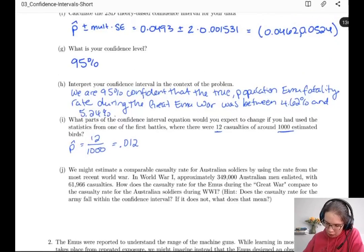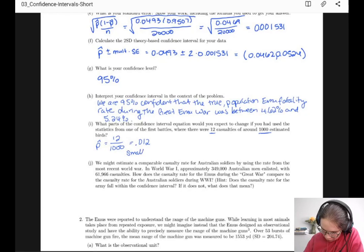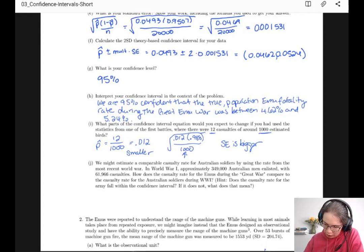So our p hat is a lot smaller, right? Our standard error is going to change primarily because we've got a 1,000 in the denominator. So we're going to have 0.012 times 0.988 over 1,000 square root. But the biggest difference is this number. So our standard error is bigger and our p hat is smaller. So we expect the confidence interval to shift left and be wider.